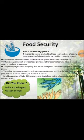The question arises: what is the food security system? In order to ensure availability of food to all sections of society, our government carefully designed a national food security system. It consists of two components: buffer stock and Public Distribution System, PDS.